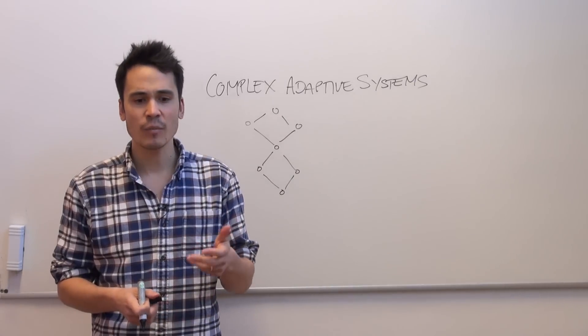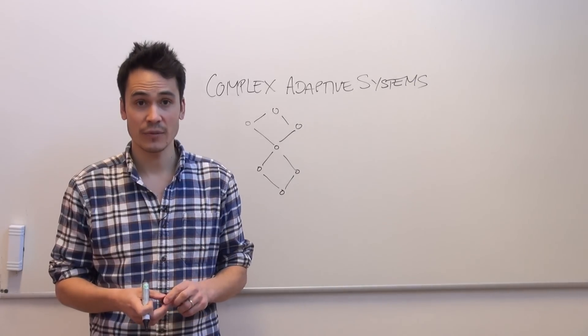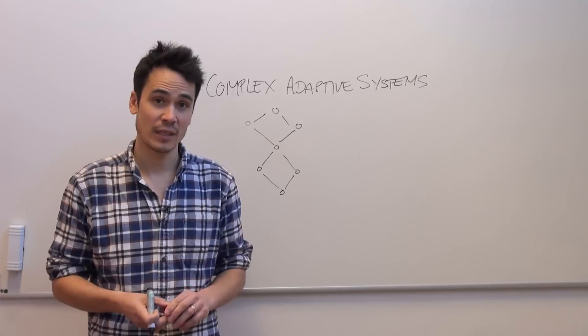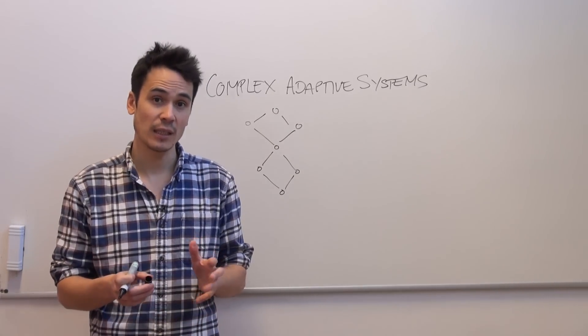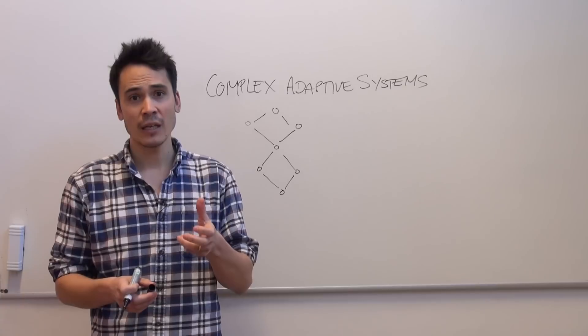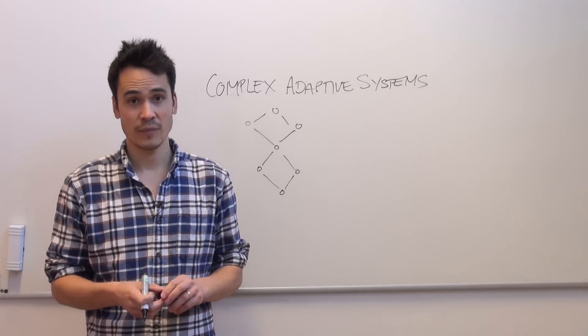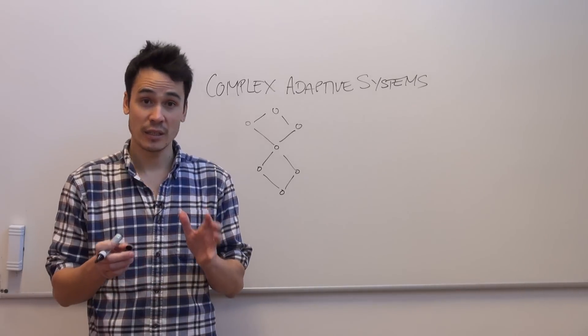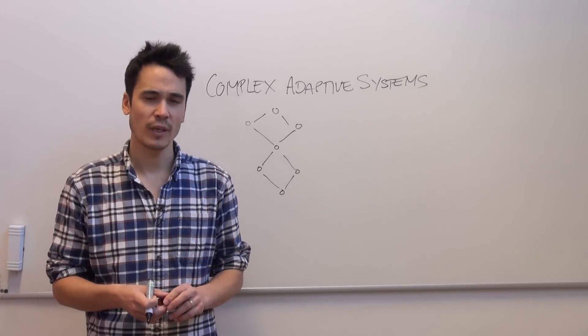The second property shared by all complex adaptive systems is one of contagion. Again, because complex adaptive systems are very well connected, things within them can spread very quickly. This could be gossip in a social network. This could be disease spreading through a human population.